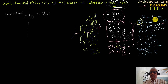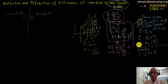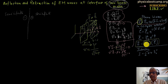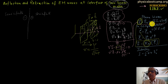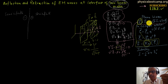We can write these in complex notation for the electric field, taking the real part to recover the physical wave. Cosine is more common and works well with the real part convention.